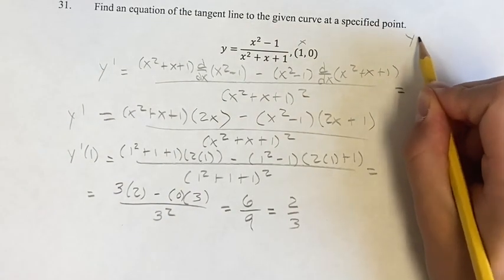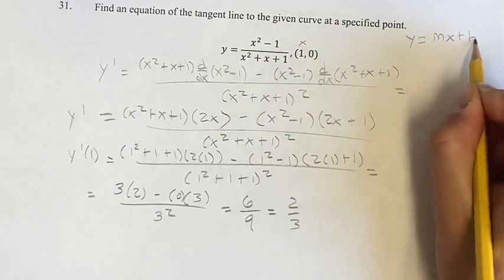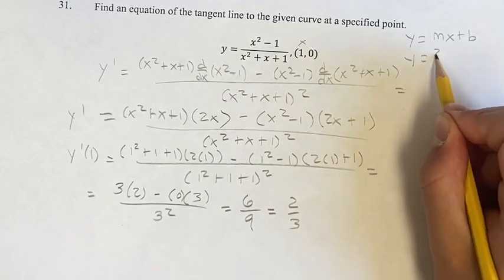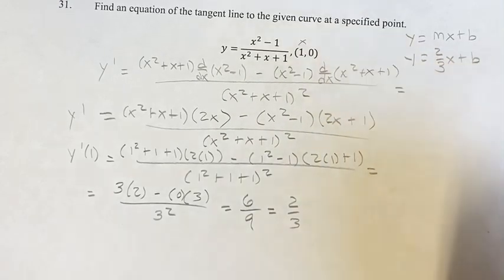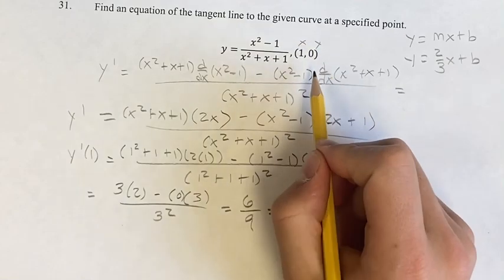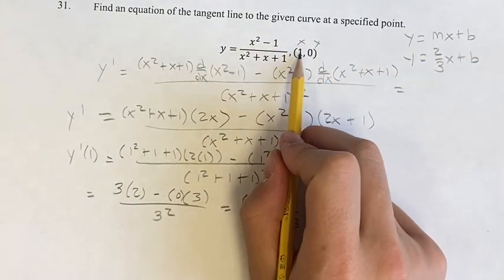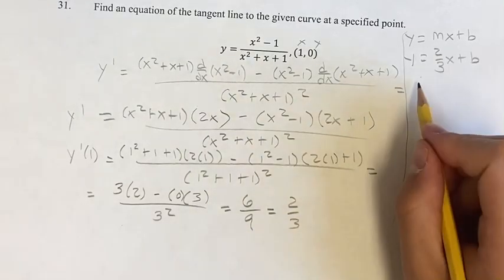So if we have the equation of the line, y equals mx plus b, we now know that the slope is 2 thirds, so m is 2 thirds. And since we know that this equation is true when x is 1 and y is 0, if we plug those in, making sure this is separate, 0 equals 2 thirds times 1 plus b.